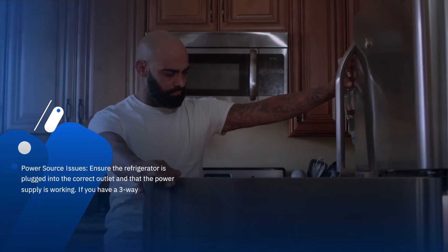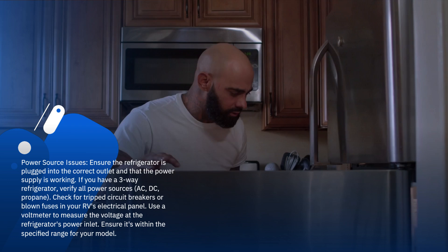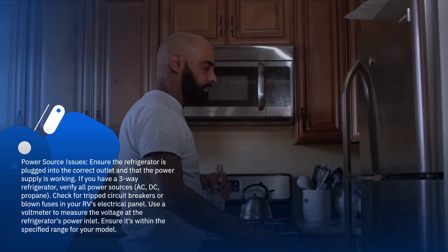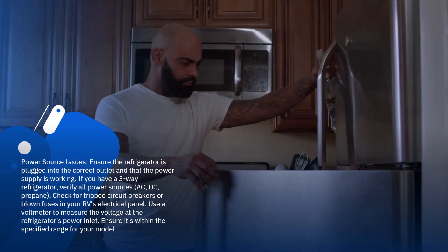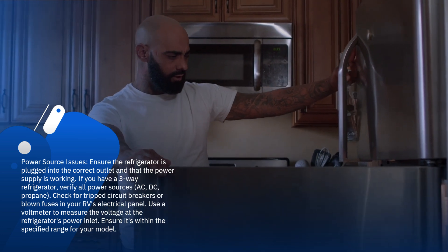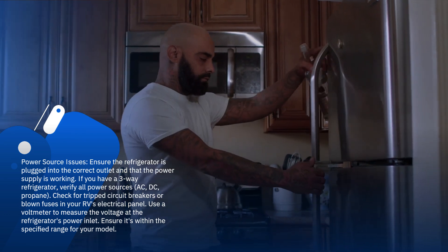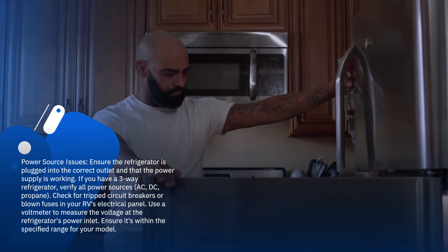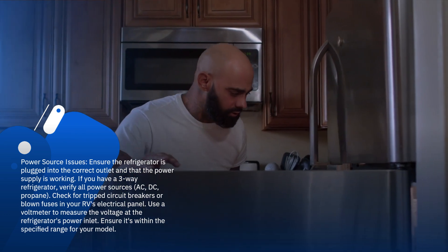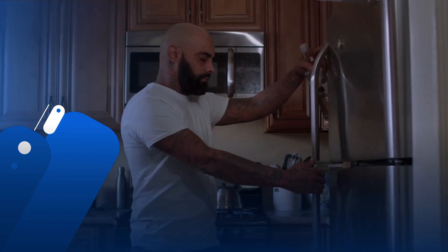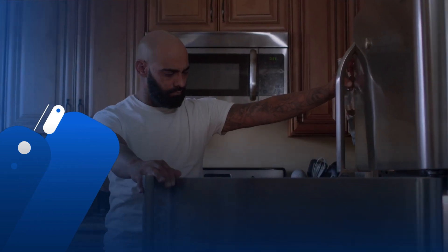Power Source Issues – Ensure the refrigerator is plugged into the correct outlet and that the power supply is working. If you have a three-way refrigerator, verify all power sources: AC, DC, and propane. Check for tripped circuit breakers or blown fuses in your RV's electrical panel. Use a voltmeter to measure the voltage at the refrigerator's power inlet. Ensure it's within the specified range for your model.